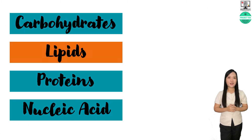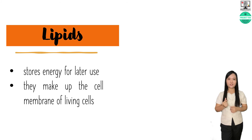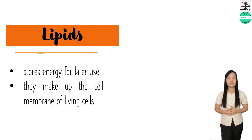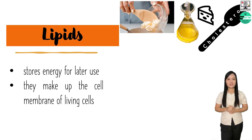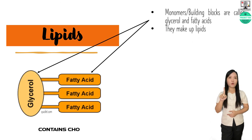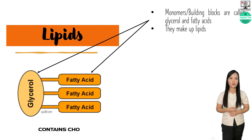The next biomolecule is a diverse group called lipids. Lipids are better known as fats, and they are great for insulating. Unlike carbohydrates that give instant energy, lipids store energy for later use, making them a great source of long-term energy. Lipids make up the cell membrane of all living cells. Some examples of lipids are butter, cheese, oil, and cholesterol. Despite the benefits of lipids, an excessive amount can be very bad for your health, so moderation is important. Lipids have two main types of building blocks: fatty acids and glycerol. Like carbohydrates, lipids also contain carbon, hydrogen, and oxygen, or CHO.